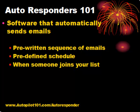An autoresponder is simply software that sends a pre-written sequence of emails, called a campaign, according to a schedule that you define in advance whenever someone joins your email list. For example, you can tell the autoresponder to send the first email as soon as someone joins your list and then send another email each day.